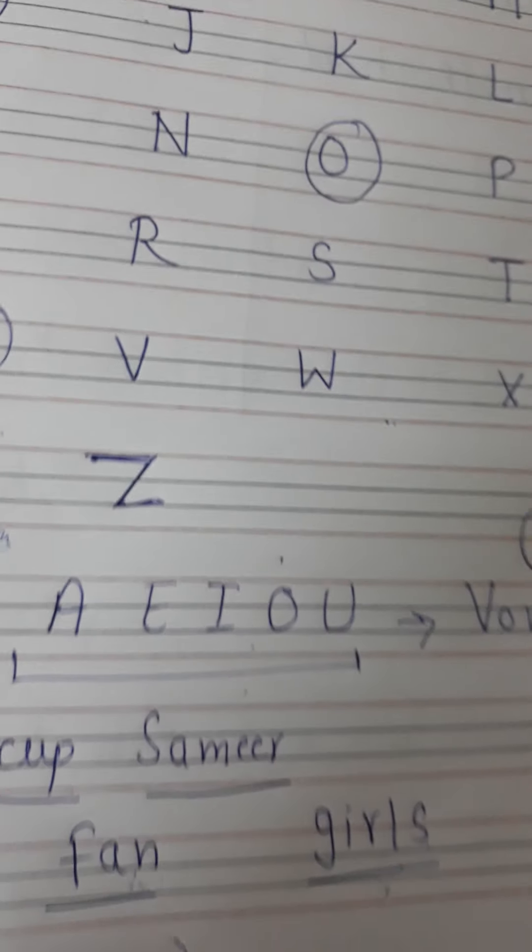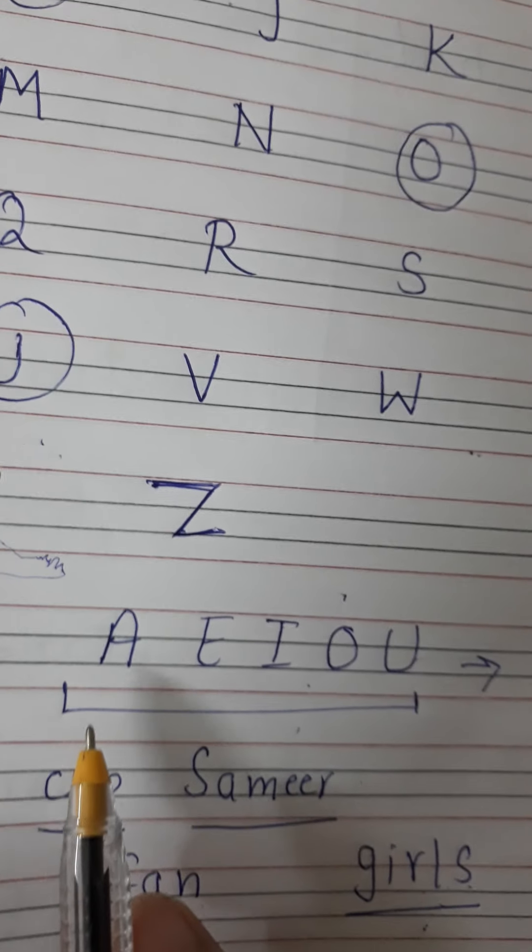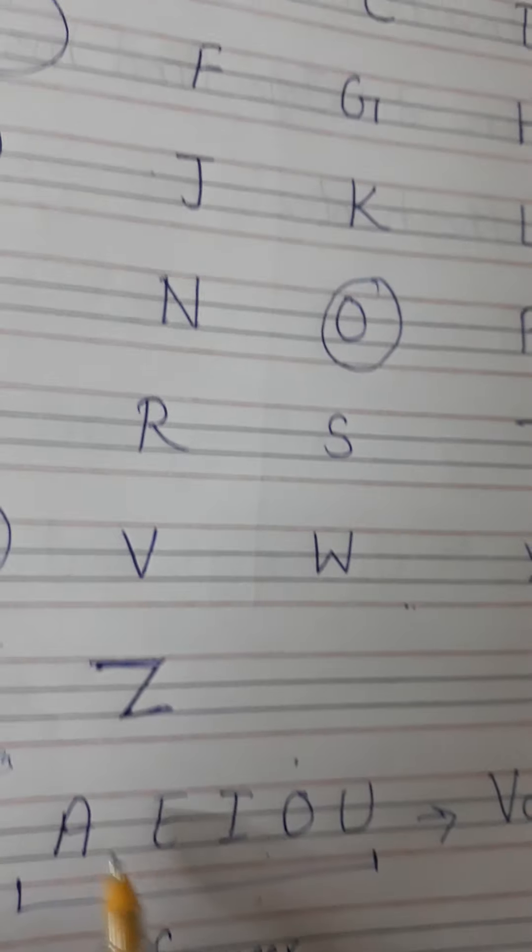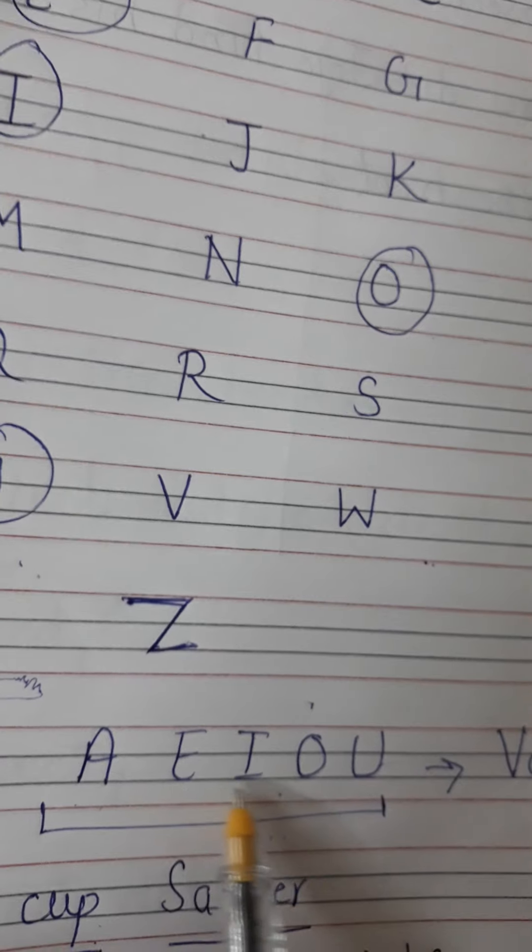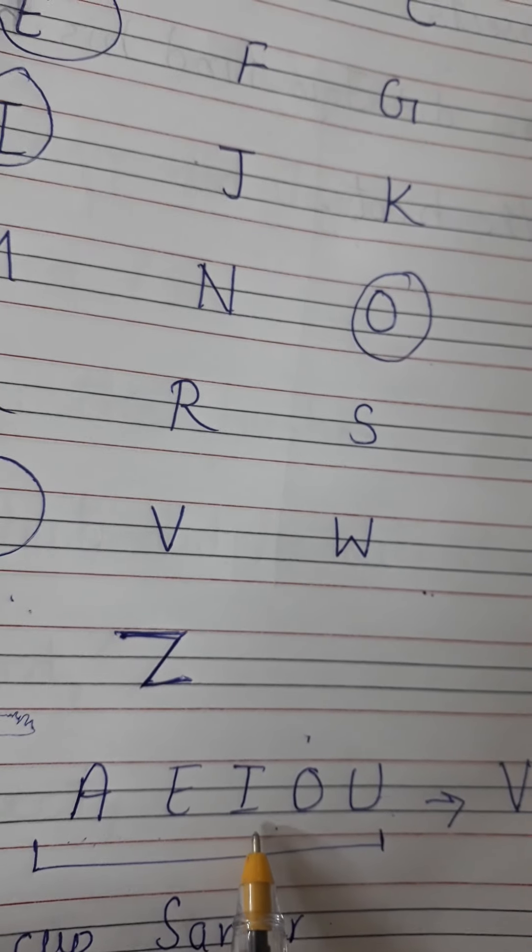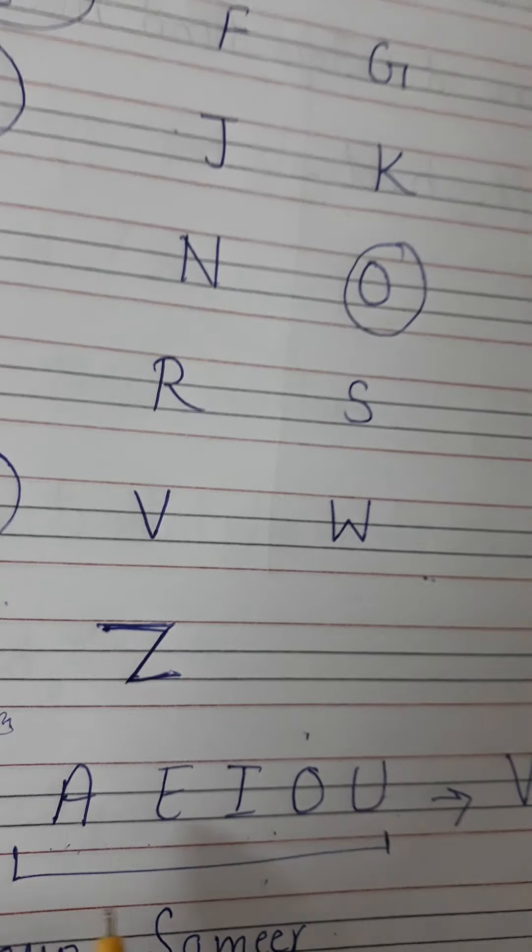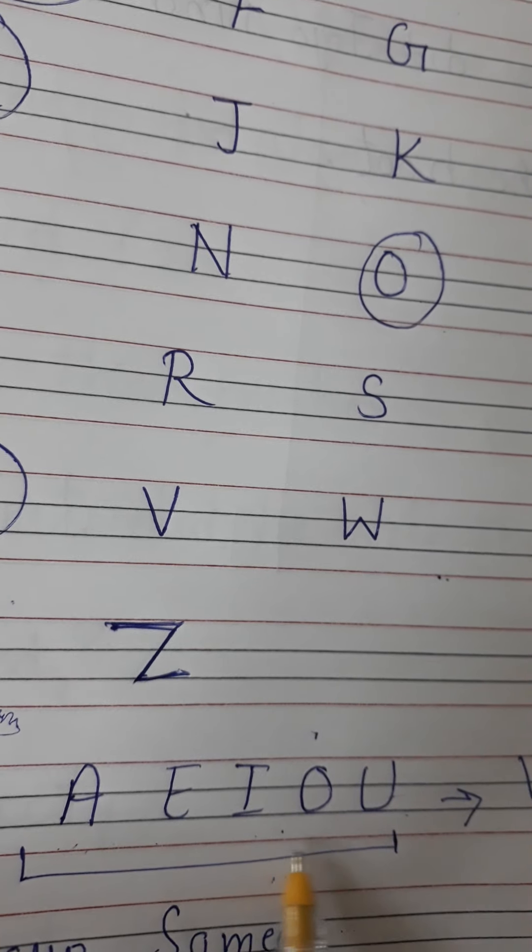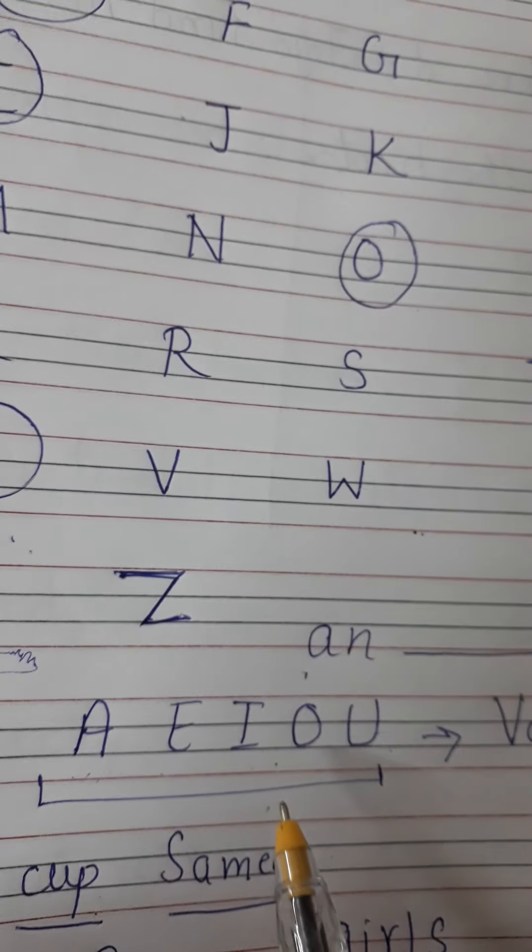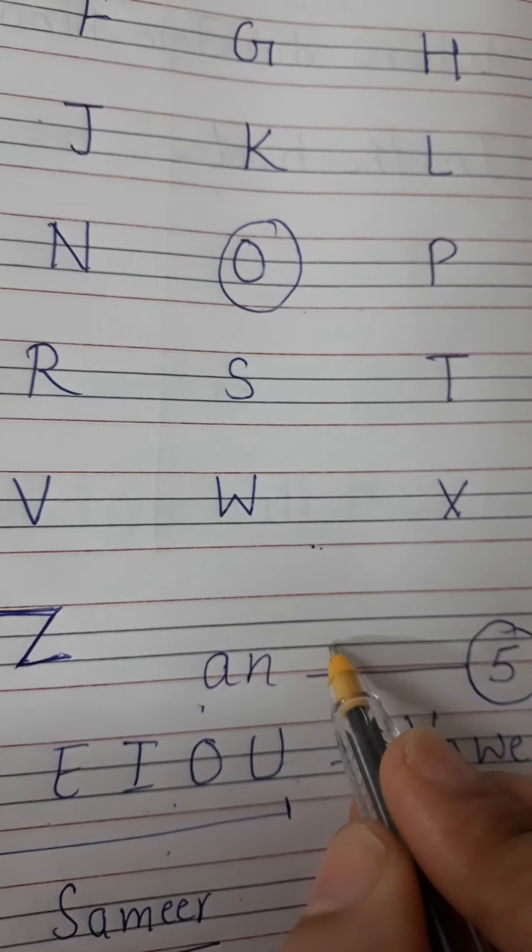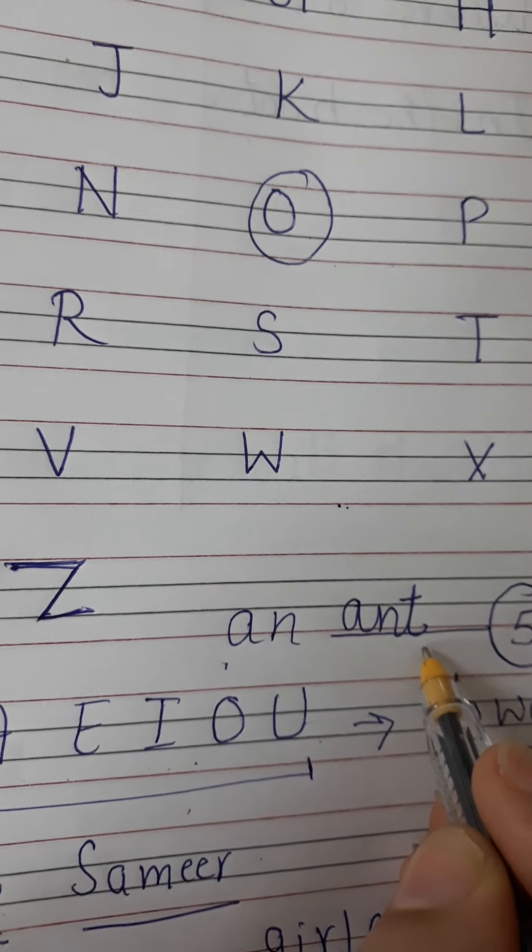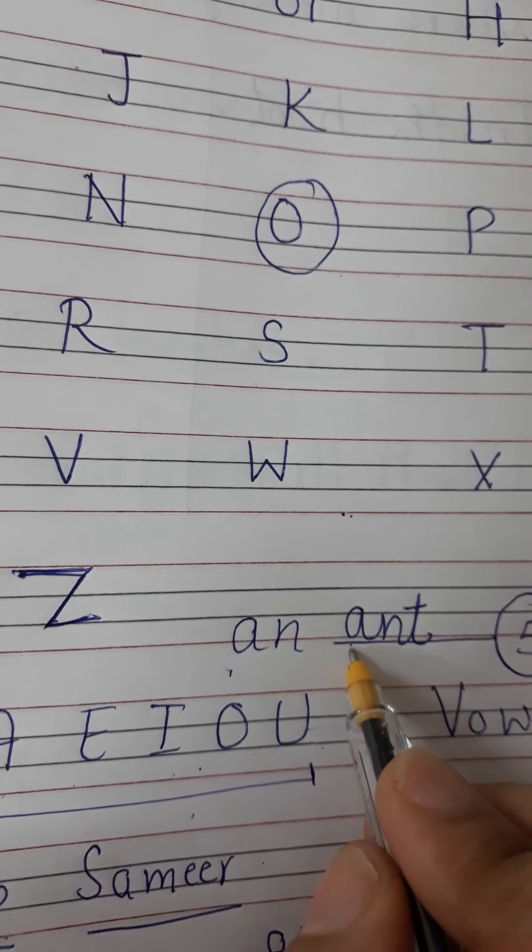So today we are going to learn about articles. Now let me explain you that you know about the vowels. There are five vowels. A-E-I-O-U. With all the singular nouns like fan, cup, girl. With all the singular nouns which start with the vowel. Any vowel sound like A, E, I, O, U. If any word, if any singular noun starts with any vowel, then we put AN before that word.